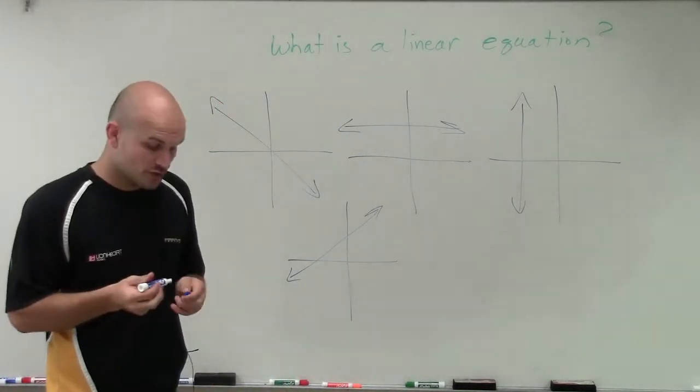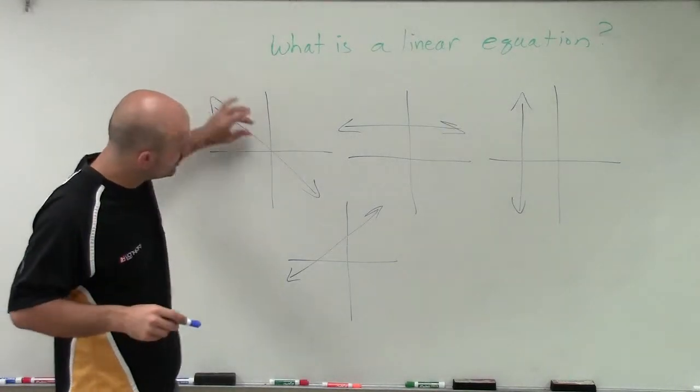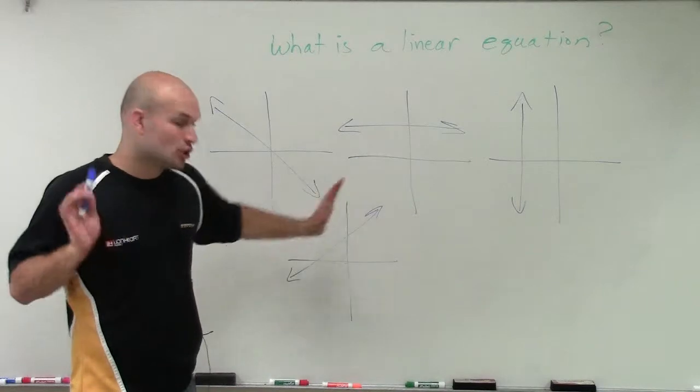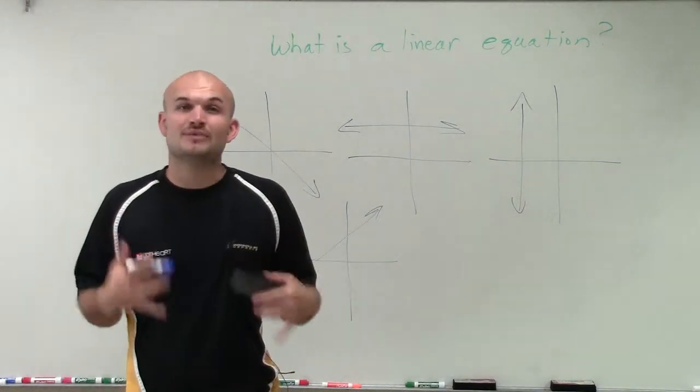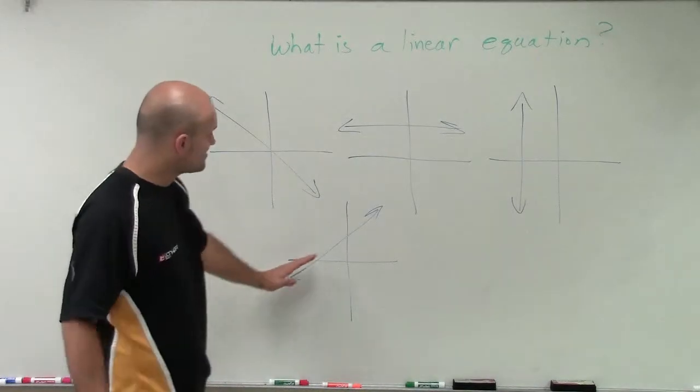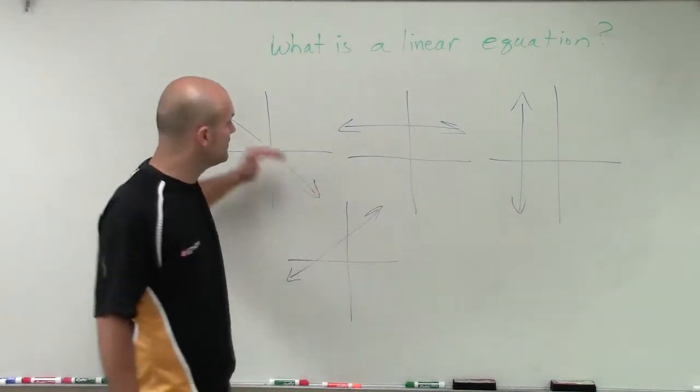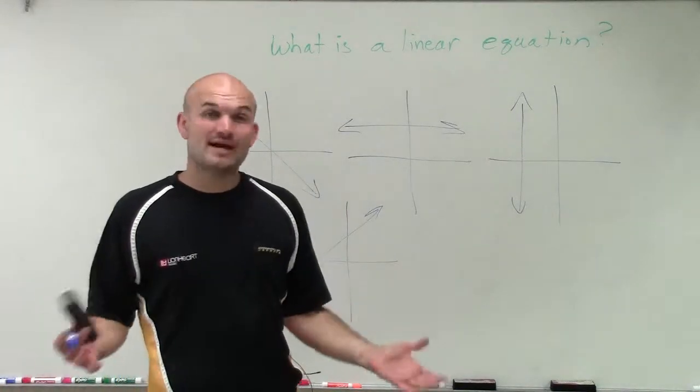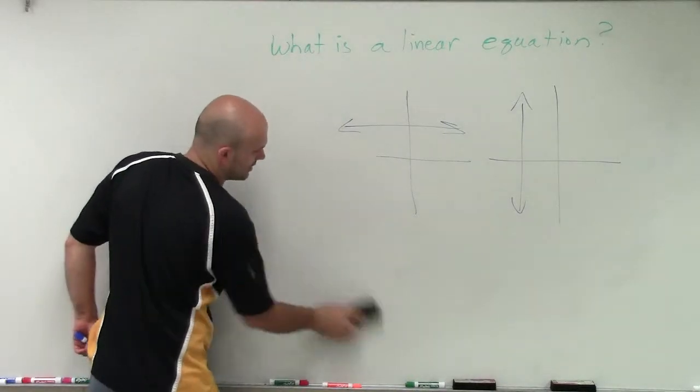A linear equation is going to produce a line where the correlation of our x and y coordinates are going to create a linear graph. Notice that the rate of change is always going to be constant. As I'm continuing up, I'm constantly going in the same direction. It's not going to take any sort of curve, and there's not going to be any breaks in a linear graph.